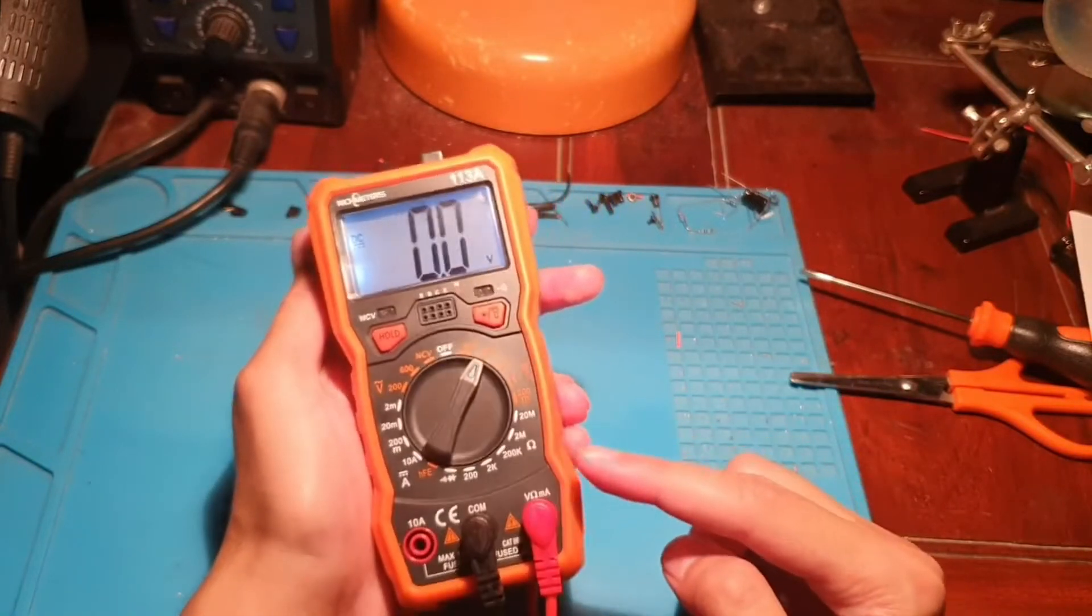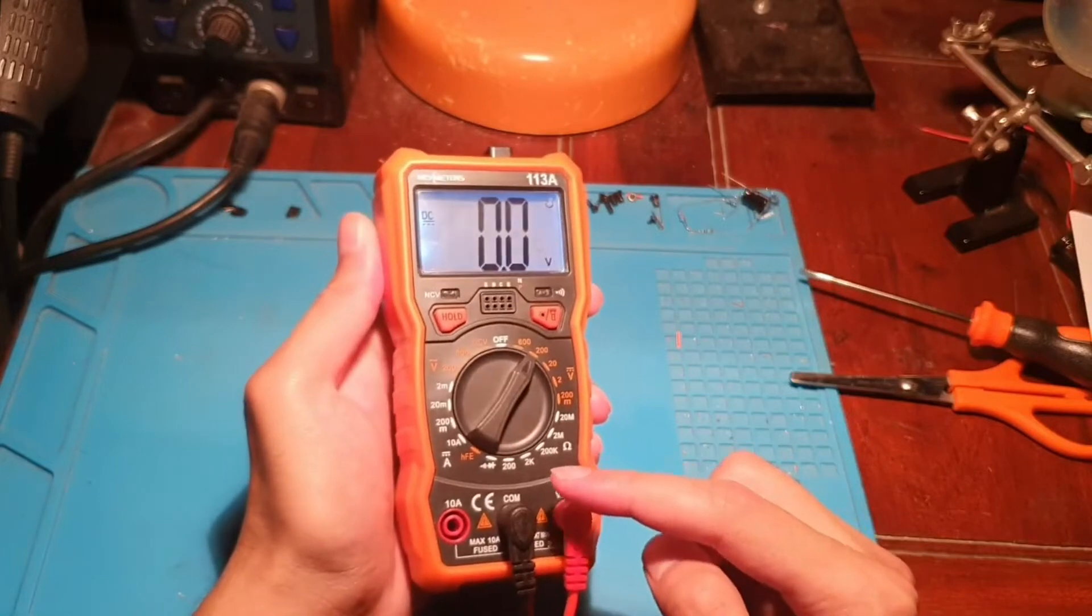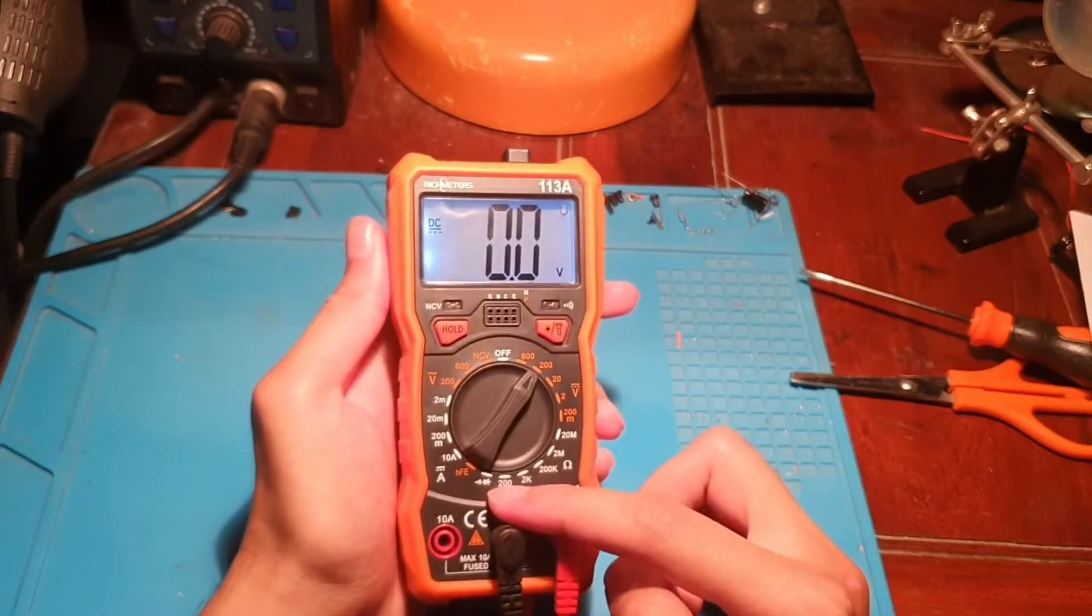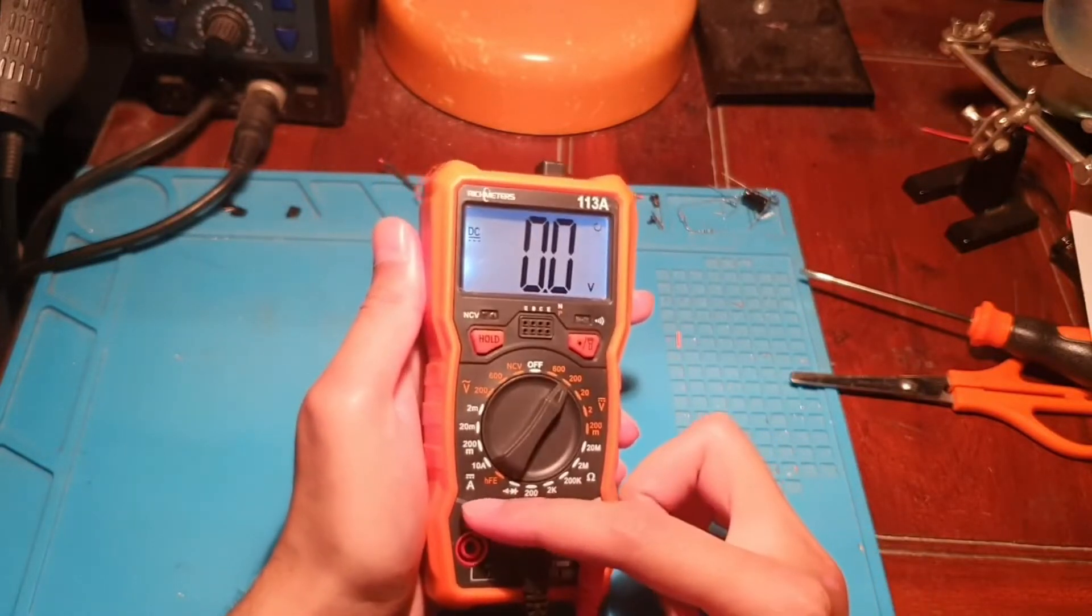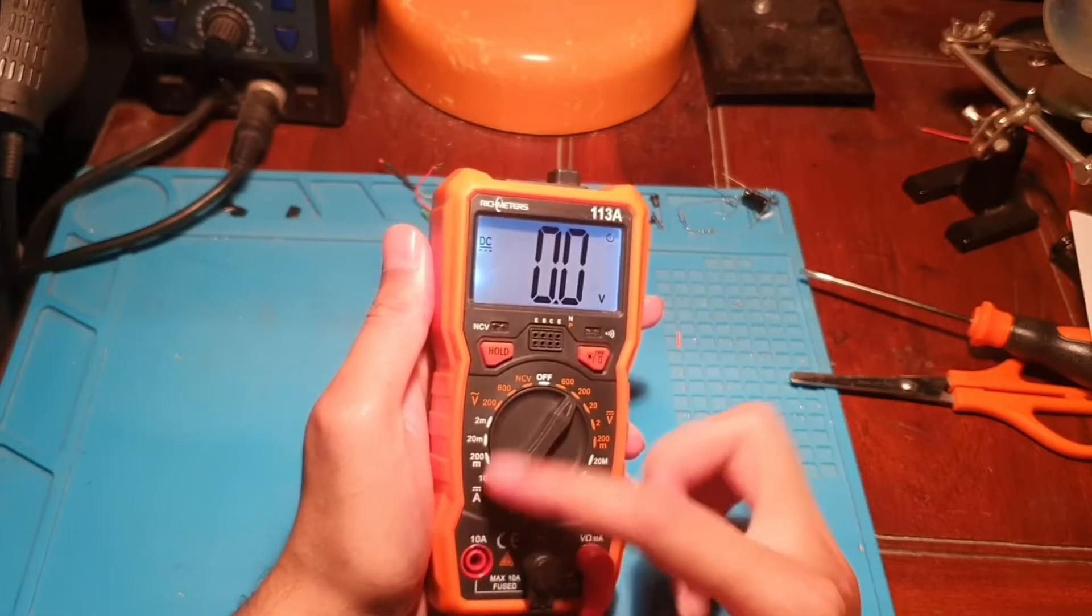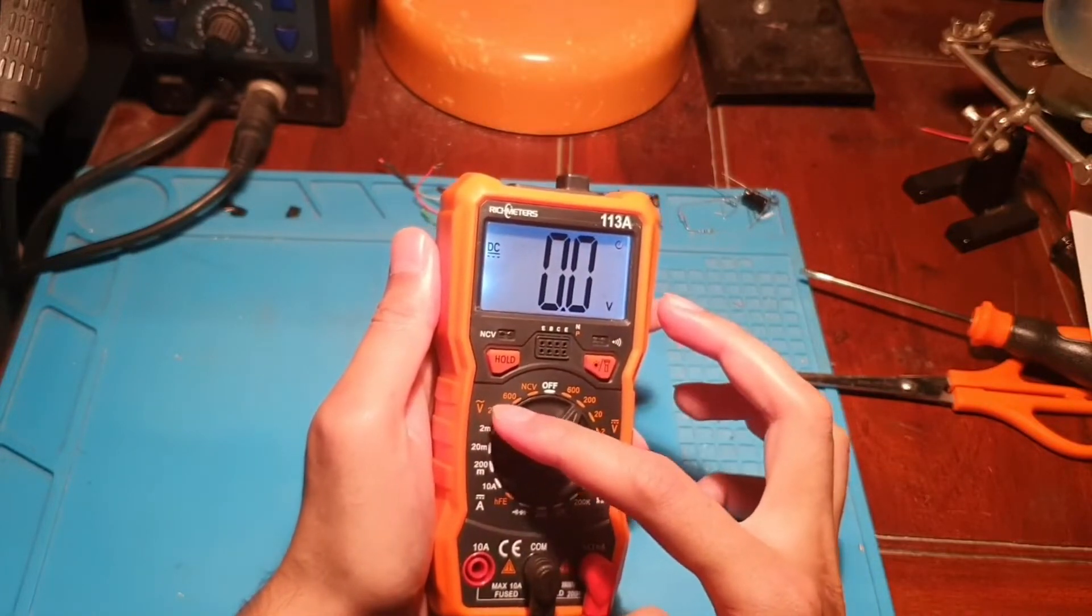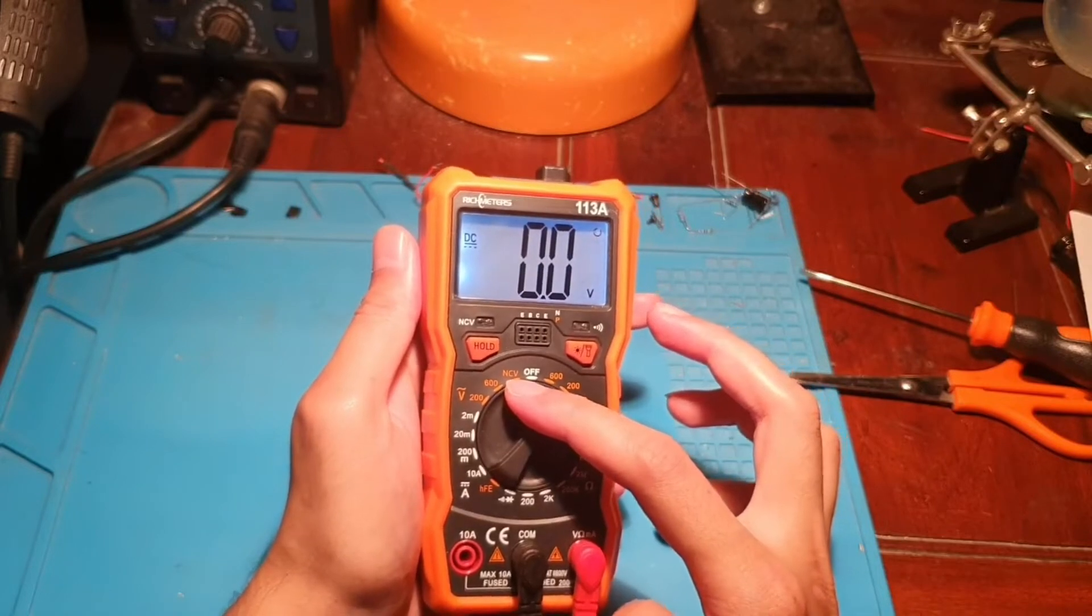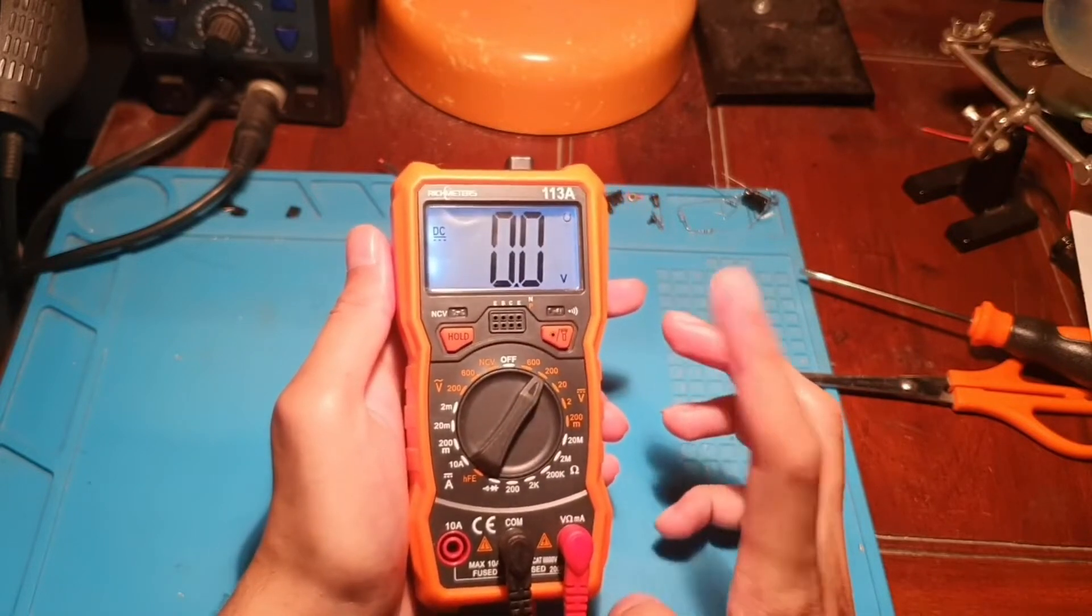We have DC voltage, we have ohms for resistance, we have continuity test as usual, we have diode test, and we have DC current, AC voltage, and NCV test, which is known for the non-contact voltage test.